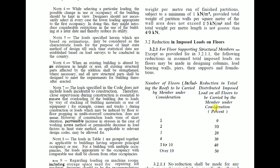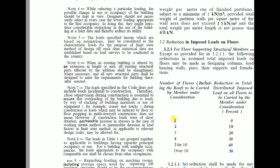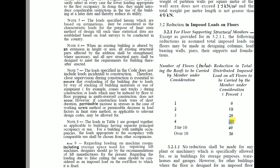The reduction percentages are given as follows — reduction in total distributed imposed load on all floors to be carried by the member under consideration. For one floor: no reduction (0%). For two floors: reduce up to 10%. For three floors: reduce up to 20%. For four floors: reduce up to 30%. For five to ten floors: reduce up to 40%. For over ten floors: reduce up to 50%.